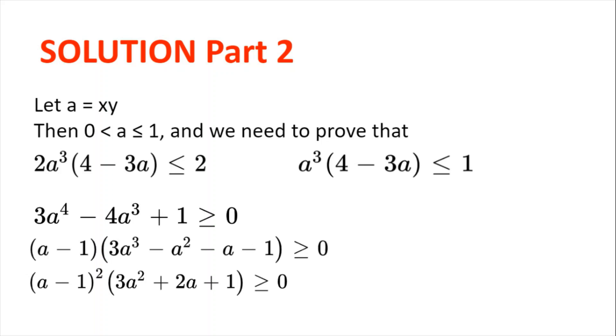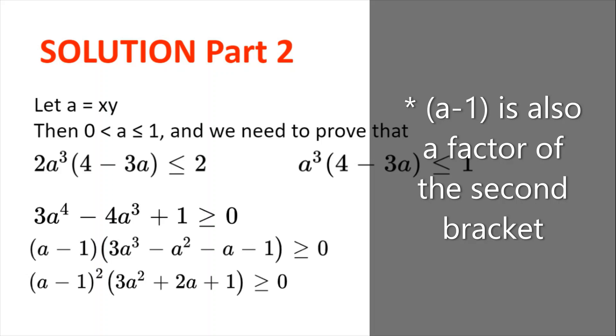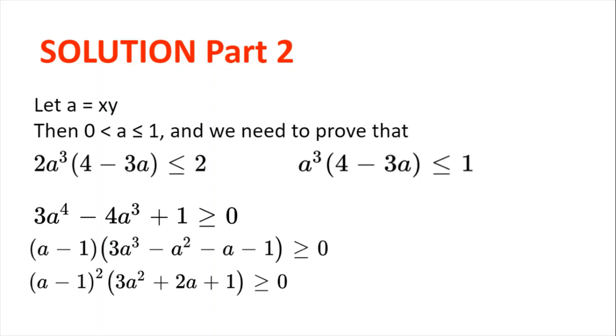Now, if we look at the second bracket and plug in the value a = 1 once more, we get 3 - 1 - 1 - 1, which is 0. So, the second bracket is also a factor of (a - 1). And so, we can rewrite the left hand side as (a - 1)²(3a² + 2a + 1) ≥ 0.